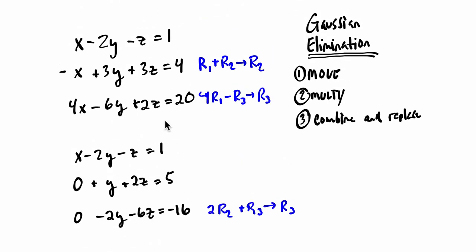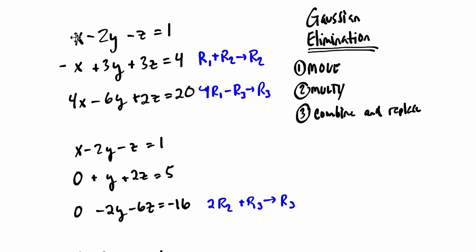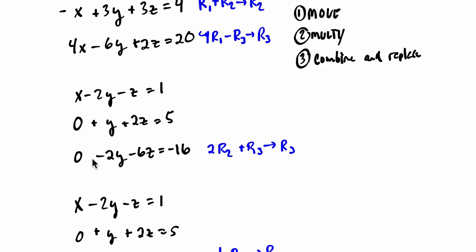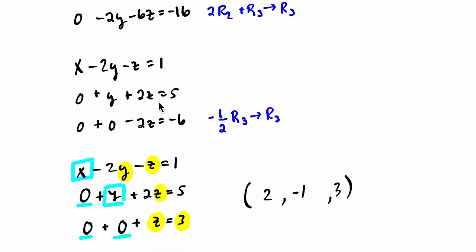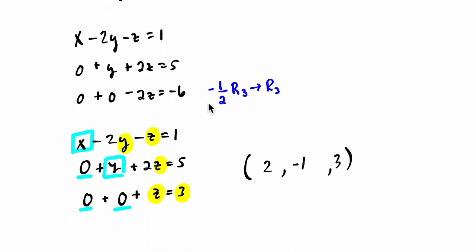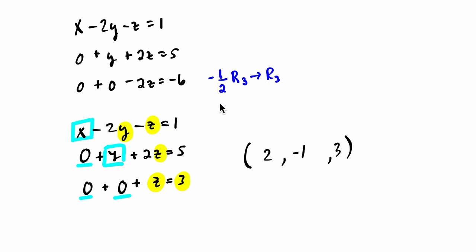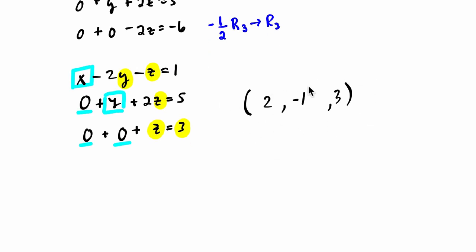To recap: we started with the original system, recognized how to get these two terms to be zero, kept track of that. We added the first two rows, multiplied the first row by 4 and added it to the third. Then we took our results and rewrote them in the second and third row. Then we eliminated the next term by adding twice the second row to the third, and multiplied our third row by a non-zero coefficient to simplify. That leads us to our answer.